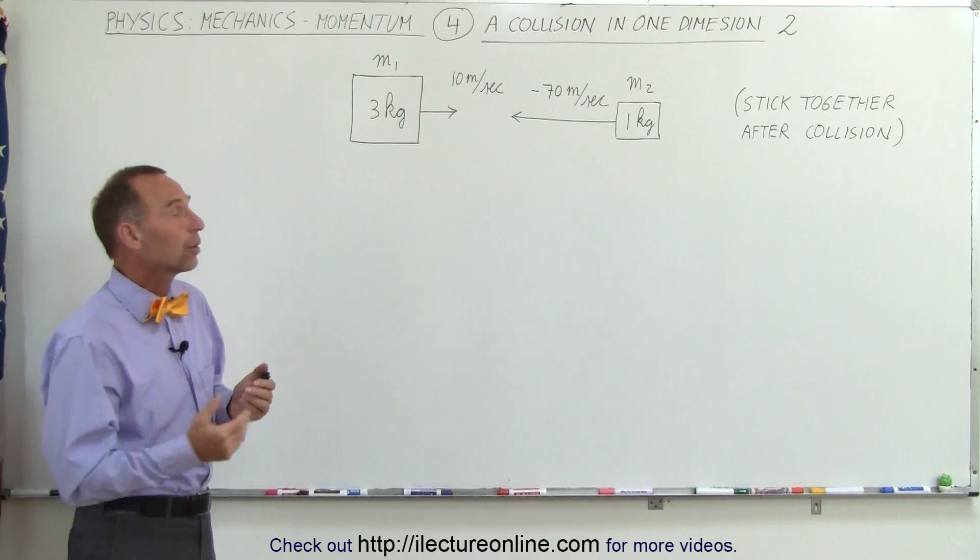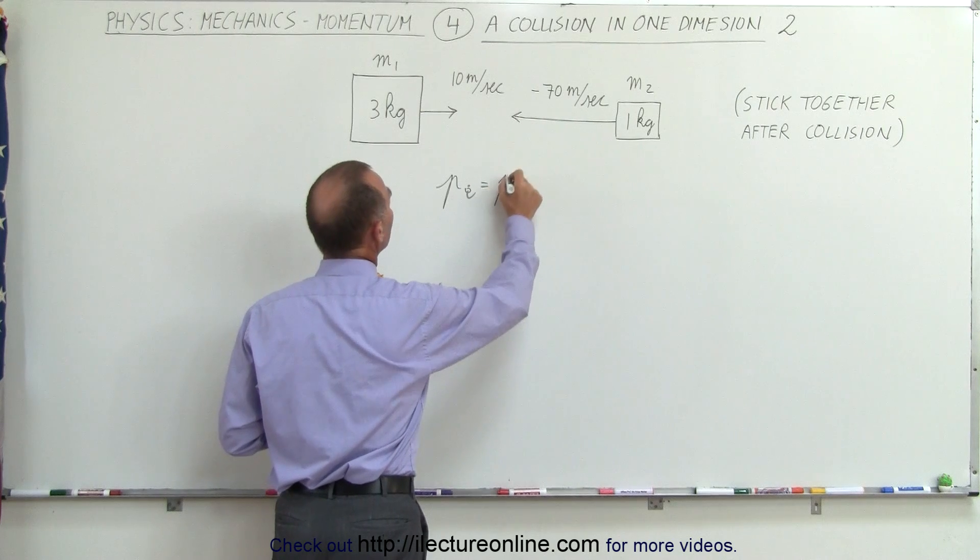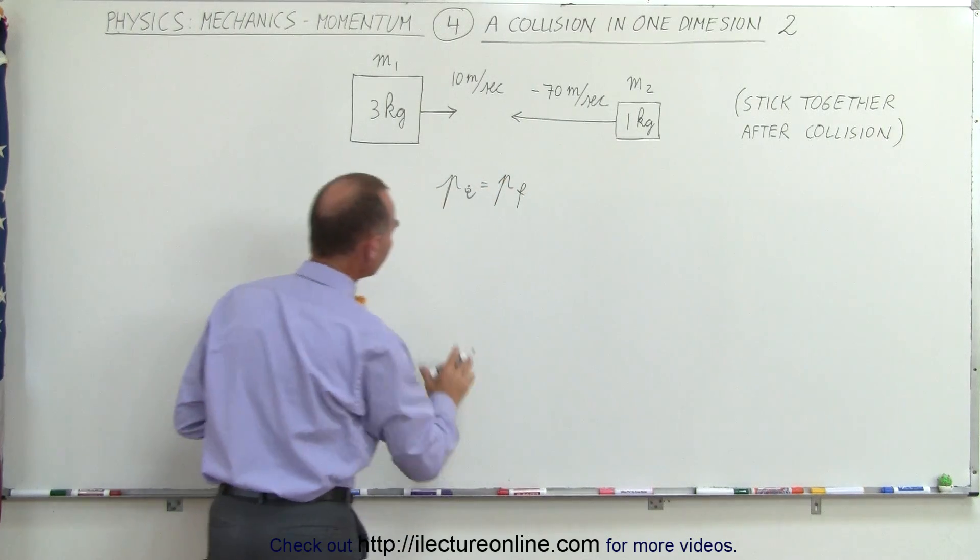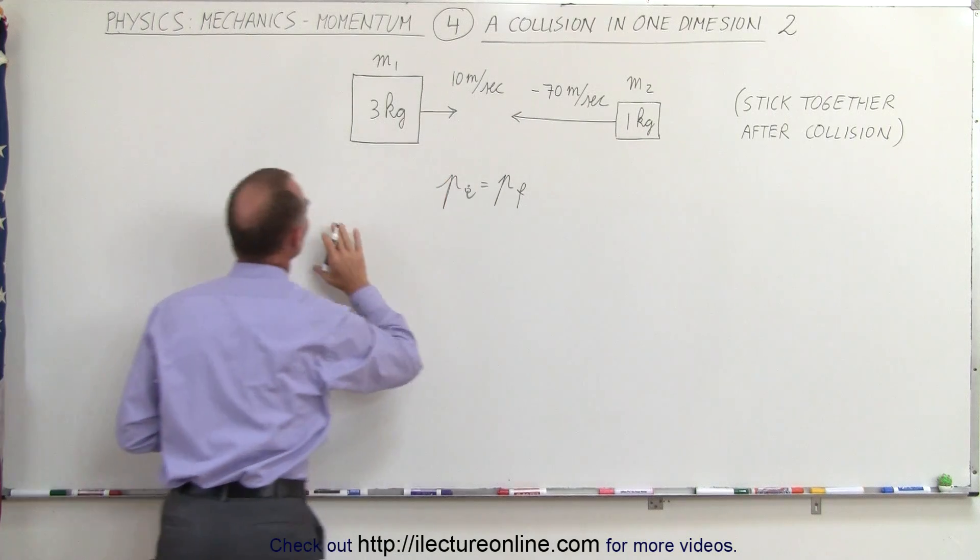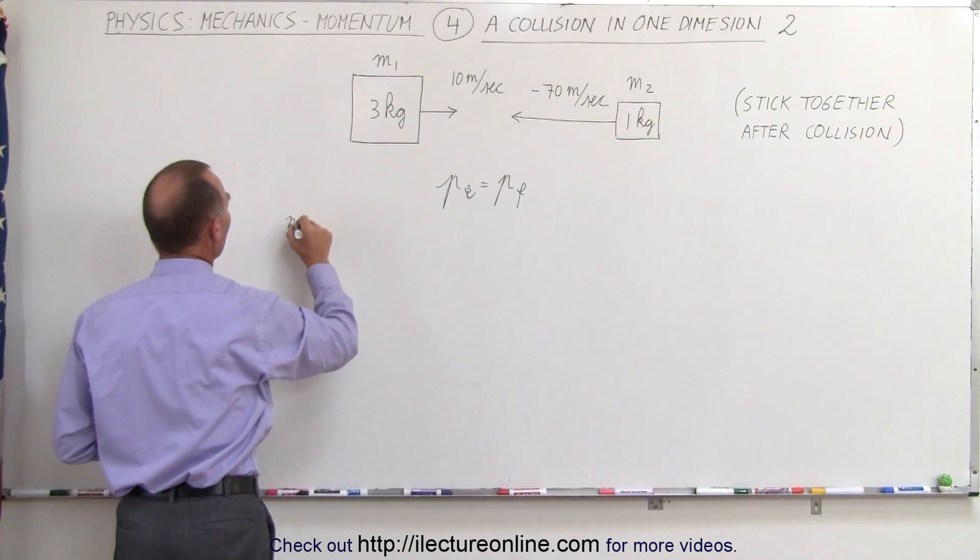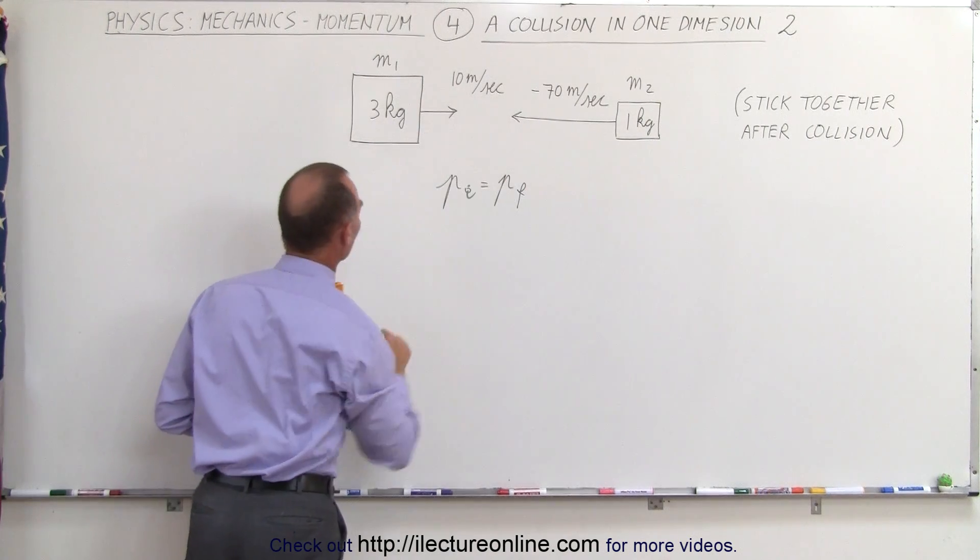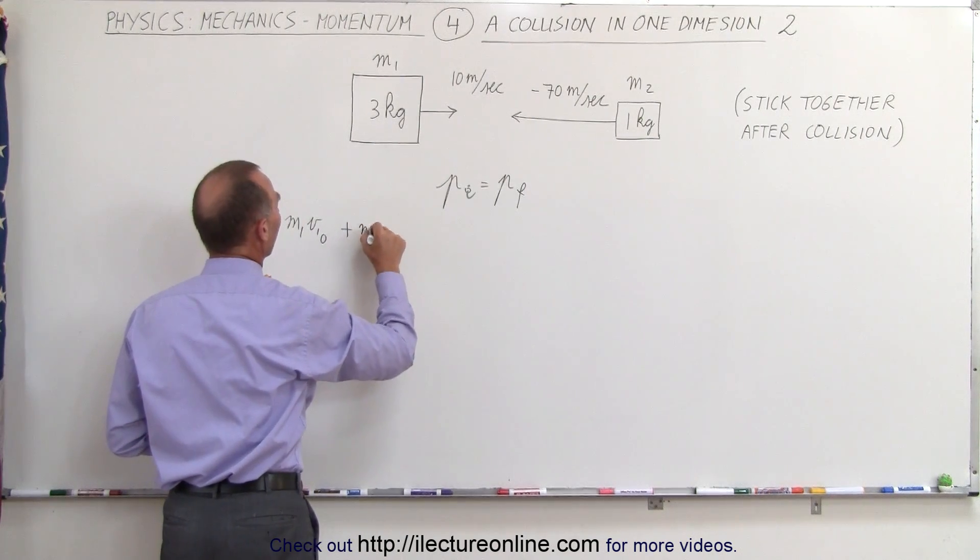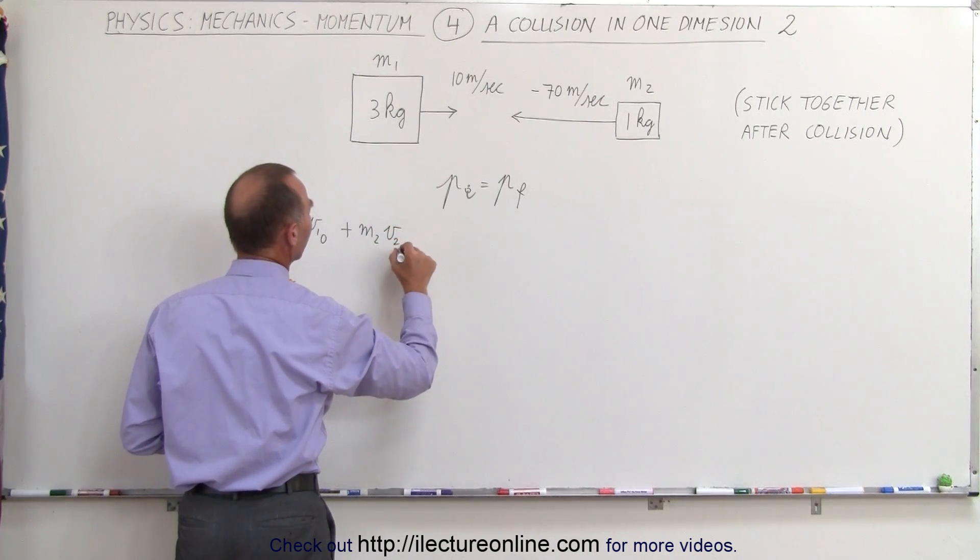So what we can do here is start with the equation that the momentum initial must equal the momentum final. Now the initial momentum consists of the two objects moving. So we have the first object which is M1 with some initial velocity, in this case that would be 10 meters per second to the right,